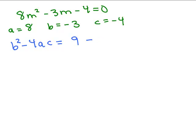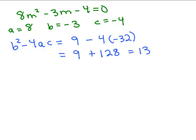Instead of writing negative 3 in parentheses squared, I can do that in my head: b squared is 9. Minus 4 times ac. I multiply a times c: 8 times negative 4 is negative 32. So it's a little less of a mess. Simplifying: 9, and a negative times a negative gives a plus, so that's 9 plus 128, which is 137. By doing this, when I plug into the quadratic formula I already know 137 goes underneath the square root.